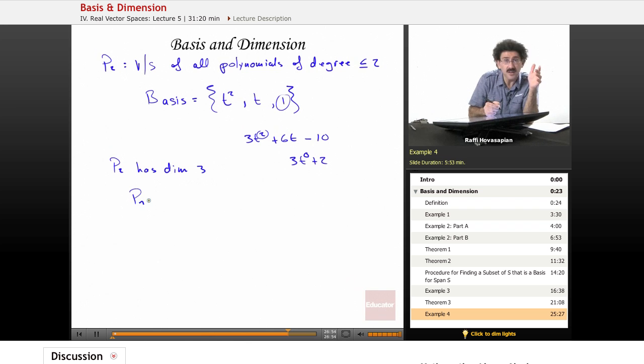Pn has dimension n plus 1. Okay. Now, here's where it gets really interesting. And this is just sort of a sideline discussion, something to think about, a little bit of mathematical culture, a little bit of abstraction.